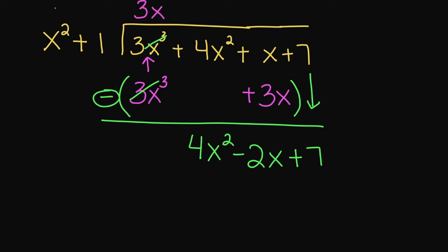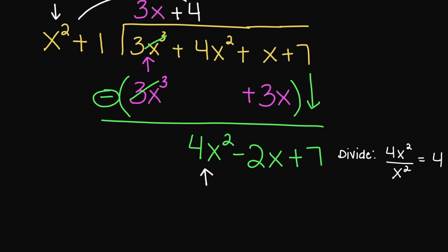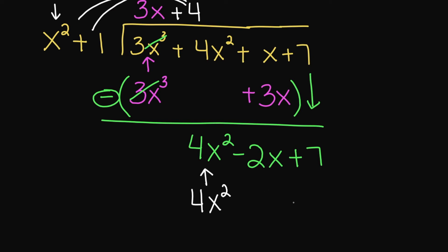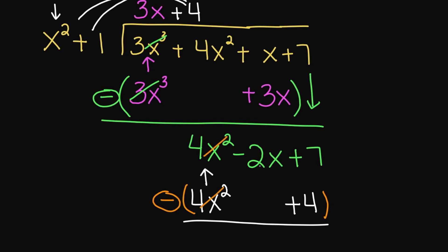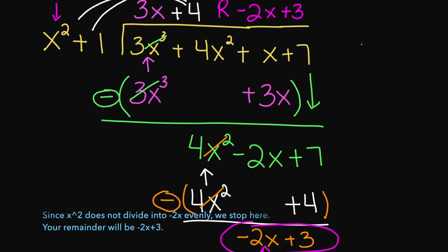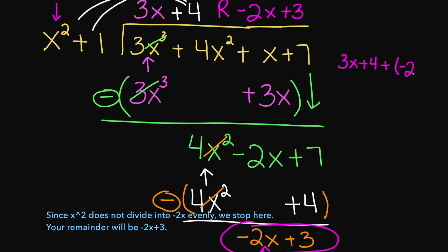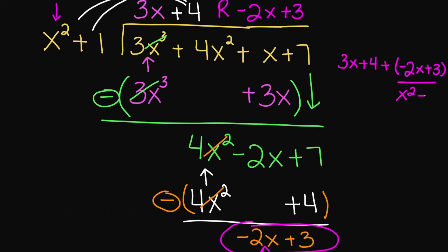I'm going to bring down my 7. Now we're going back to our divisor. What number do I need to multiply my x squared with that's going to give me 4x squared? That's a positive 4, because 4 times x squared gives us 4x squared, and 4 times 1 gives us a positive 4. Now we subtract: 4x squared minus 4x squared cancels out. We have negative 2x minus 0, which equals negative 2x, and 7 minus 4 gives us positive 3. So your remainder is negative 2x plus 3. The correct way to write this is your quotient 3x plus 4, plus negative 2x plus 3, over x squared plus 1. That's your quotient, your remainder, and your divisor.